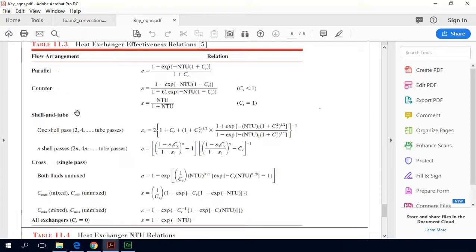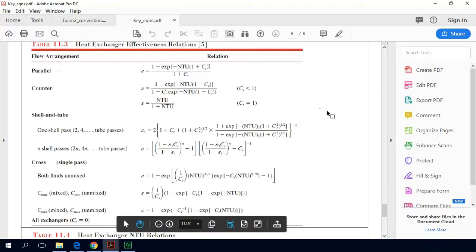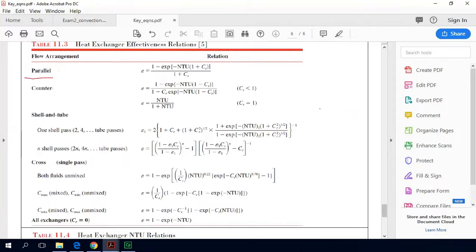So the first step would be to look through the various configurations and find the relationship that matches our problem. So this is a co-current flow heat exchanger, which is the same as a parallel flow heat exchanger, which means we're going to want a relationship of this form. So this is the relationship that we'll use.